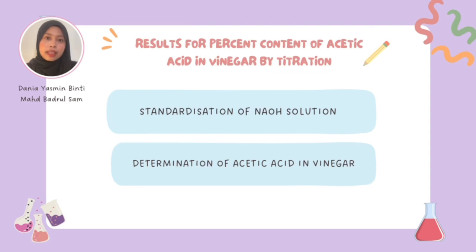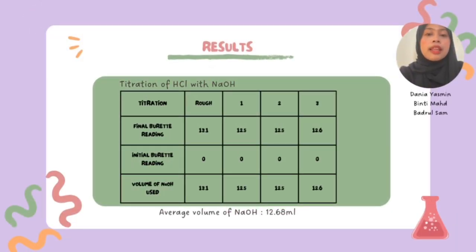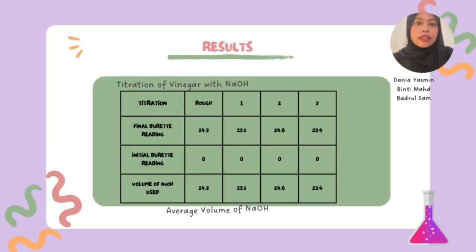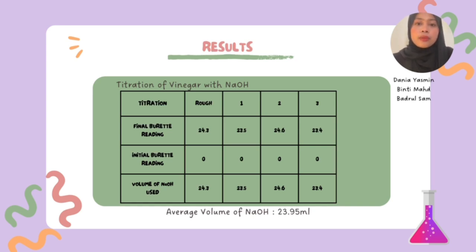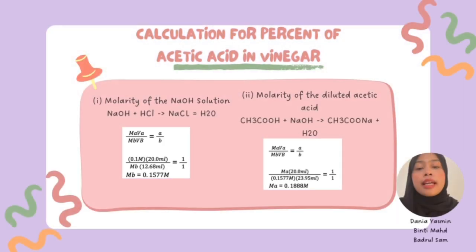Results: determination of percent content of acetic acid in vinegar by titration. For the standardisation of sodium hydroxide with HCl, the titration was repeated 3 times for accurate results. The average volume of sodium hydroxide used is 12.68 mL. For the titration of vinegar with NaOH, this was also repeated 3 times, and the average volume of sodium hydroxide used is 23.95 mL.